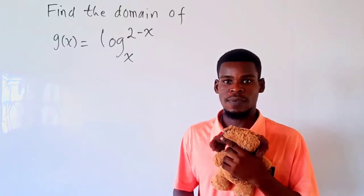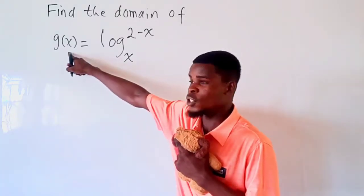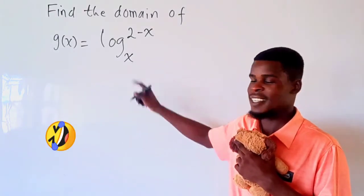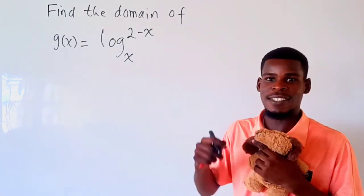In this video we want to find the domain of this function. We have the function g(x) to be the logarithm of 2 minus x divided by x, so the base of this function is just x.